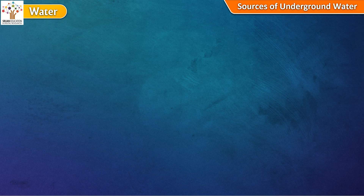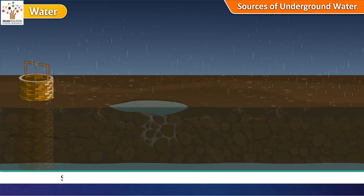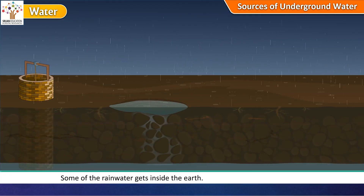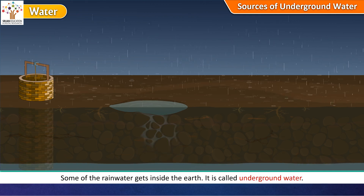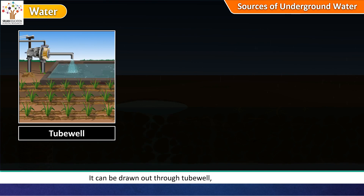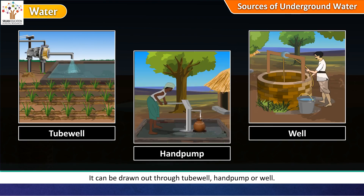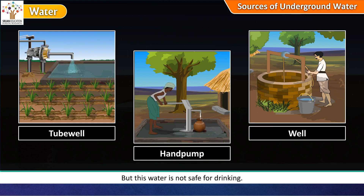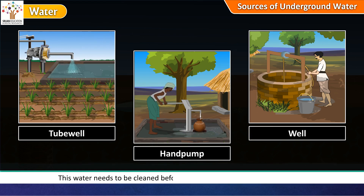Sources of underground water. Some of the rainwater gets inside the earth. It is called underground water. It can be drawn out through a tube well, hand pump or well. But this water is not safe for drinking. This water needs to be cleaned before it can be used for drinking or cooking.